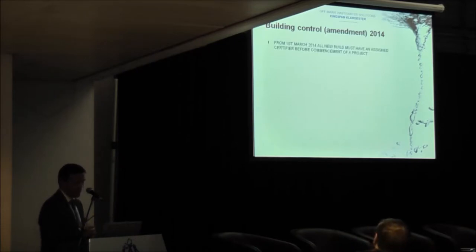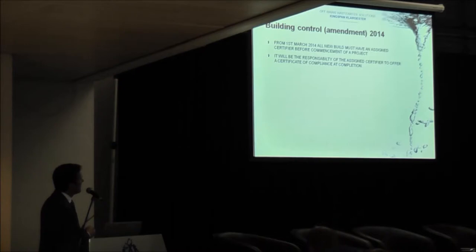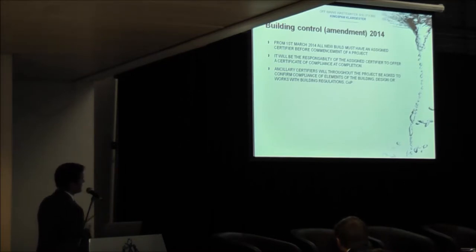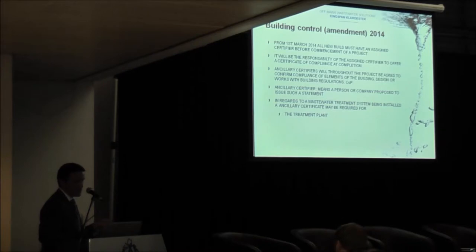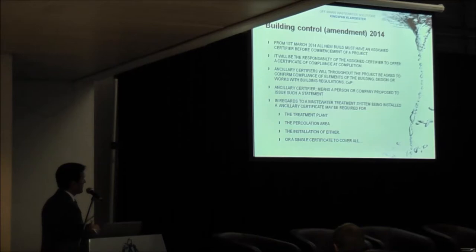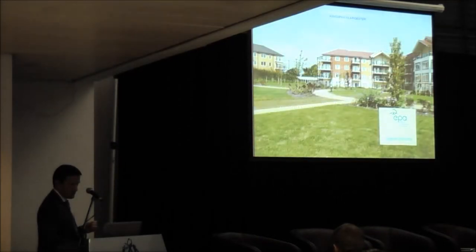Our latest amendment in 2014 - we all have to have an assigned assessor before the commencement of the project. It'll be the responsibility of that certifier to give a certificate of compliance. That certifier will use other certifiers to help - ancillary professionals. Particularly for our area they'll be looking at the code of practice and the current building regulations. Ancillary certifiers can supply certification to the primary certifier. What are you looking for in terms of certification? You need to be looking for your treatment plant, your percolation area, and the installation of them both. Depending on how you work with your advisor, you can either have an installation certification for either or combined for both.